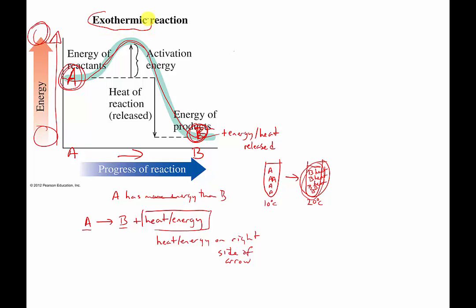This type of reaction, when you have heat or energy released or put on the right side of the equation, has a special name. It's called an exothermic reaction. Thermic basically means heat. Exo means going outside. So in an exothermic reaction, heat or energy is released. It's released to the outside world because A used to have a lot of energy. That turned into something that had less energy. And the extra energy just got released to the rest of the world. That's called an exothermic reaction.